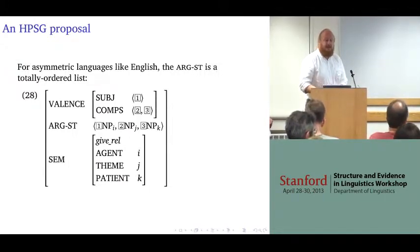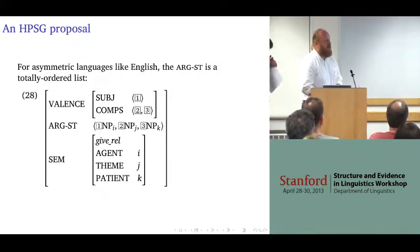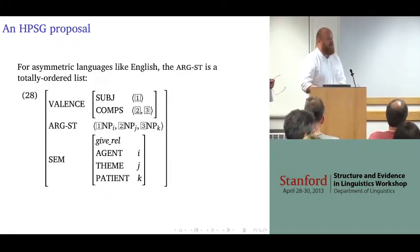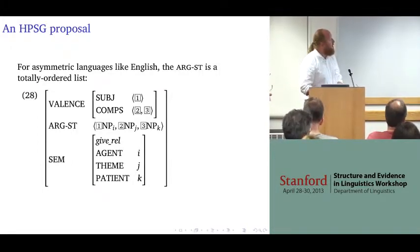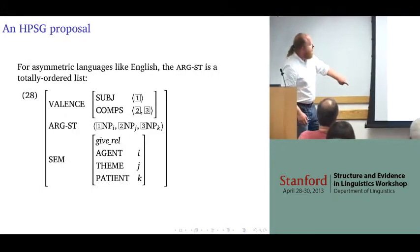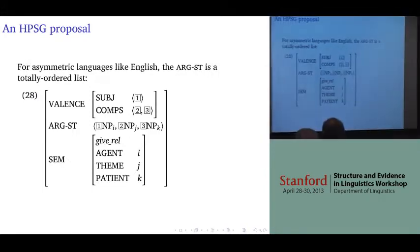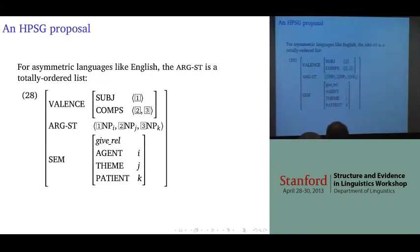The asymmetry of objects in English or other asymmetric languages is derived from their asymmetry in the representation — the argument structure, the argument structure list.